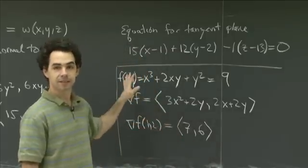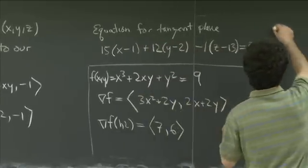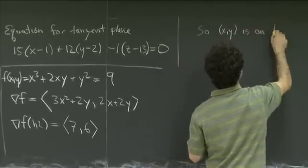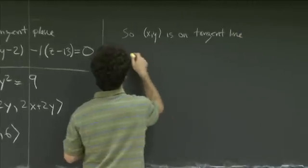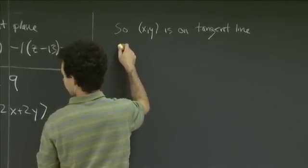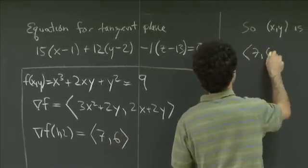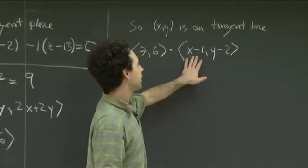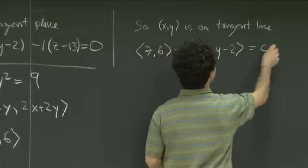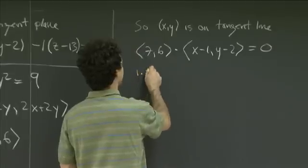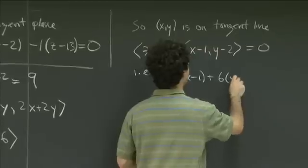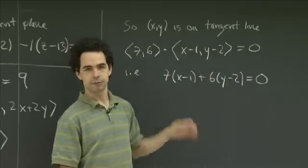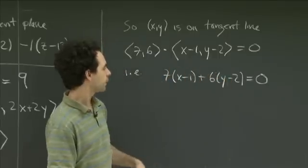And so again, the same analysis as we use in the tangent plane case works in the tangent line case. So (x, y) is on the tangent line if and only if we have the gradient dot, that's the gradient (7, 6) dot the vector (x minus 1, y minus 2). This is the vector connecting the point (x, y) to our point (1, 2) equals 0, if and only if those two things are orthogonal. So this is 7 times (x minus 1) plus 6 times (y minus 2) equals 0. So this is the point normal form for the equation of that line.